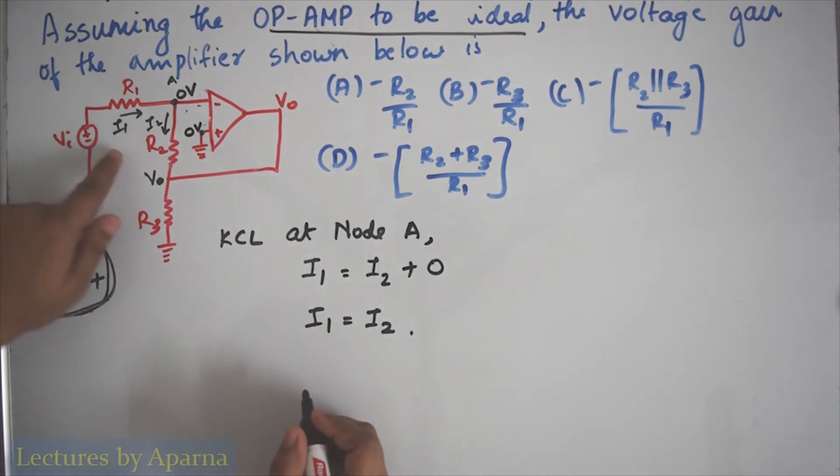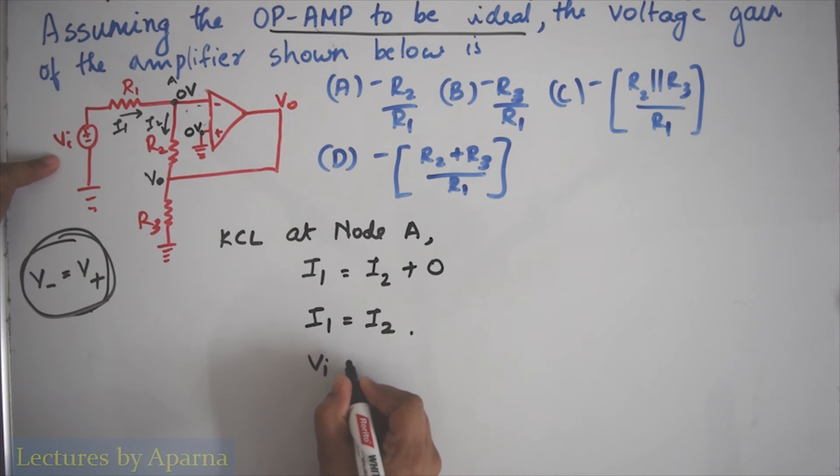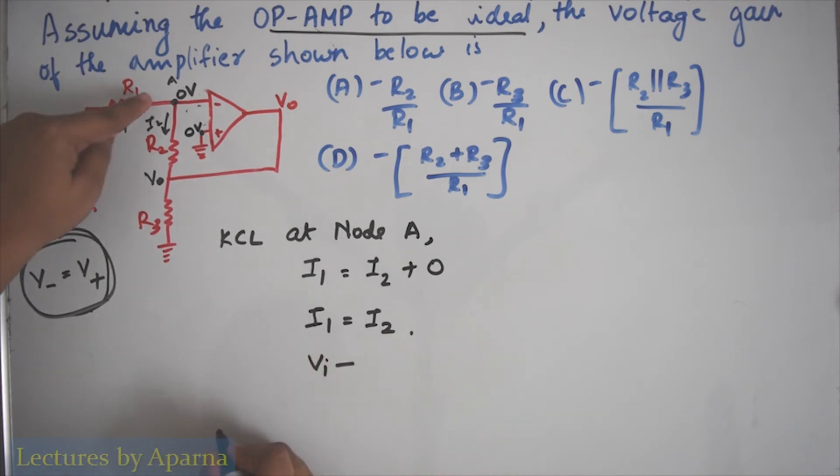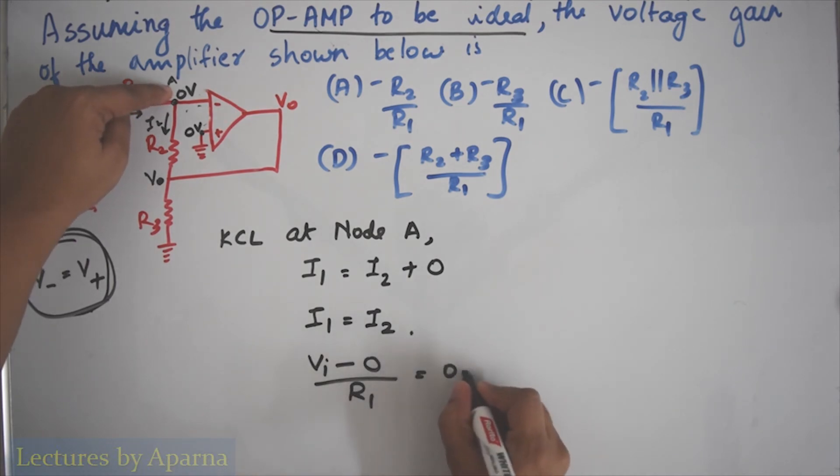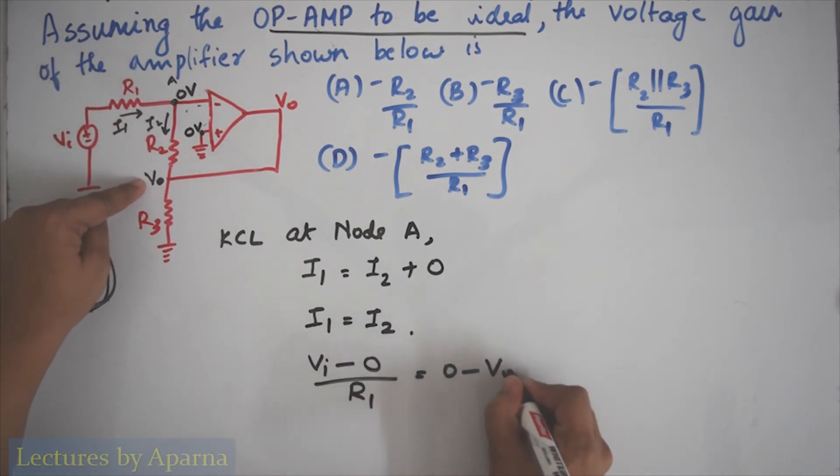Therefore, we can write the equation for I1 as VI minus 0 volt divided by resistance R1, which is equal to I2, which equals 0 minus V0 divided by R2.